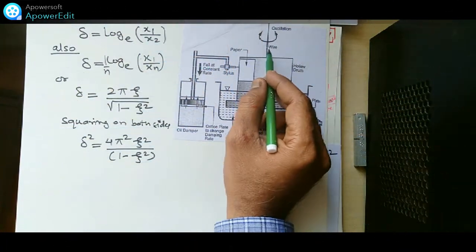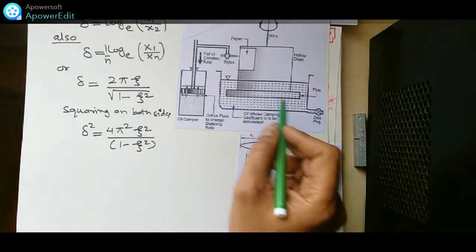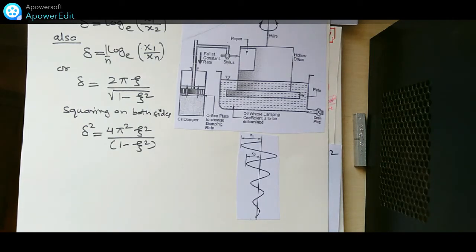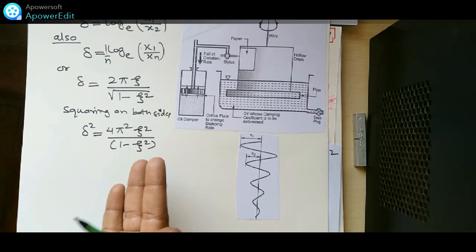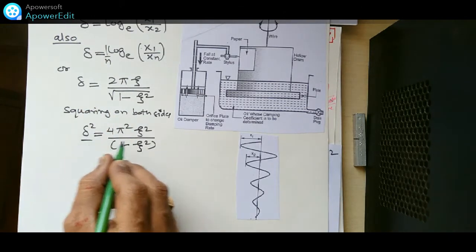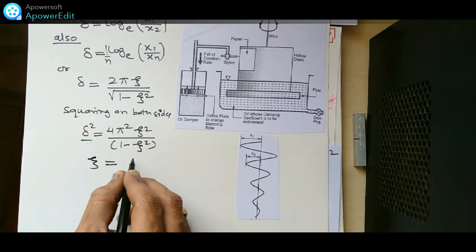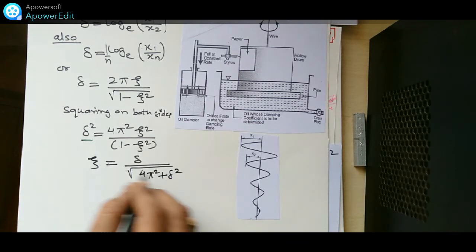From the experimental setup, we can find the values of δ and ζ. Using the formula: ζ = δ / √(4π² + δ²) — obtained by squaring both sides of the logarithmic decrement equation — we can calculate the damping factor ζ from the measured value of δ.